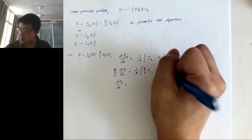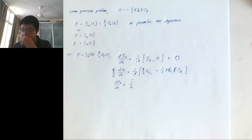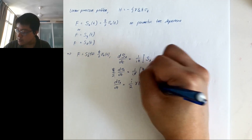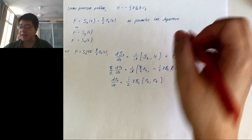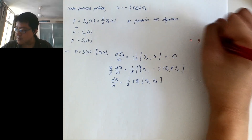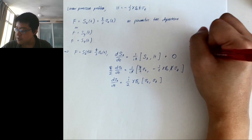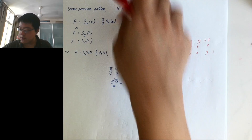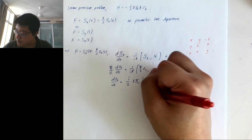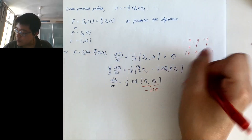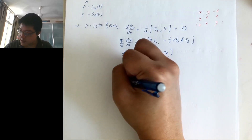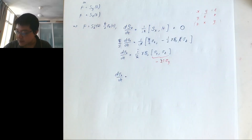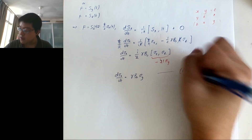Using the Pauli matrix commutator [σ_x, σ_z] = -2iσ_y (since it's in reverse cyclic order), the factors of 2 and i cancel, giving dσ_x/dt = γB₀σ_y. For the y-component, similarly dσ_y/dt involves [σ_y, σ_z] = 2iσ_x, giving dσ_y/dt = -γB₀σ_x. For the z-component, σ_z commutes with itself so dσ_z/dt = 0.